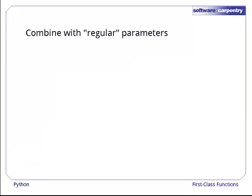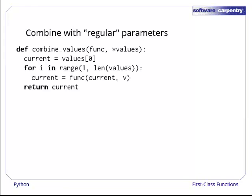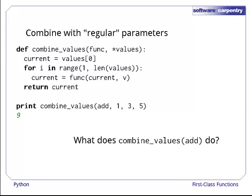We can use this catch-all parameter with regular parameters, as long as the catch-all comes last. Here, for example, is another version of combined values. The only difference between it and the previous version is the star in front of the parameter values. This small change means that we don't have to put the values we want to combine into a list before calling the function. The first actual parameter is assigned to func as before, and everything else goes into the tuple values. As an aside before we finish this episode, what do you think combined values will do if we only provide a function and no values for that function to operate on? More importantly, what do you think it should do?